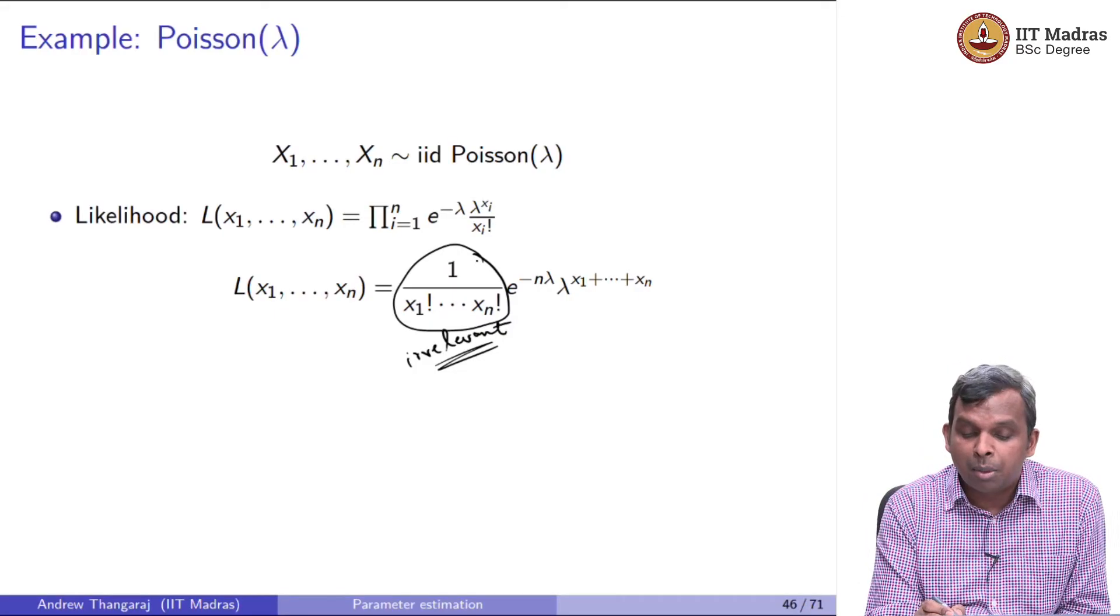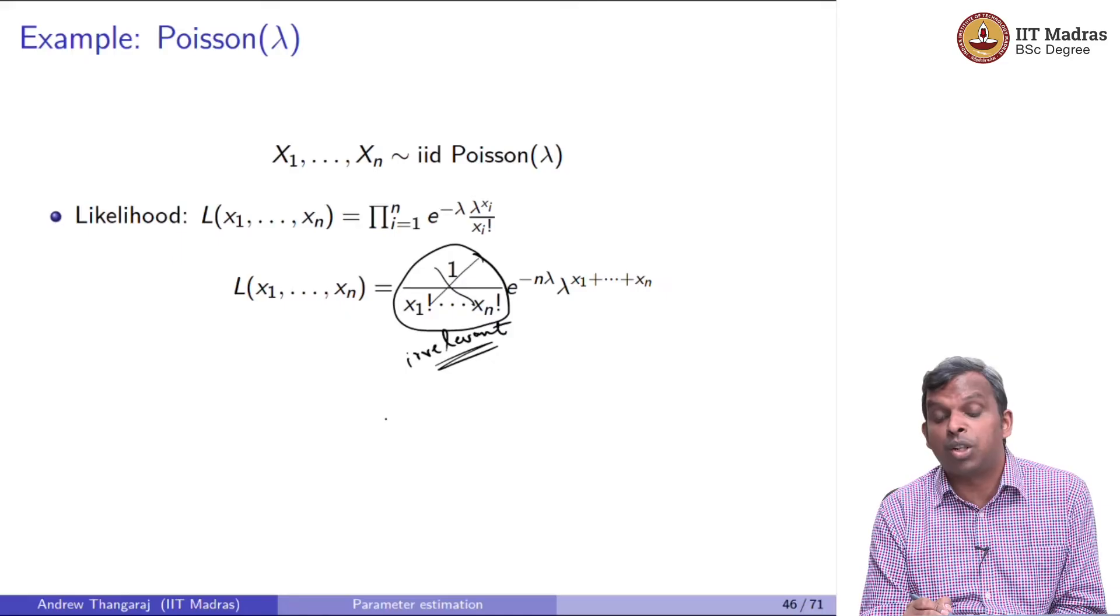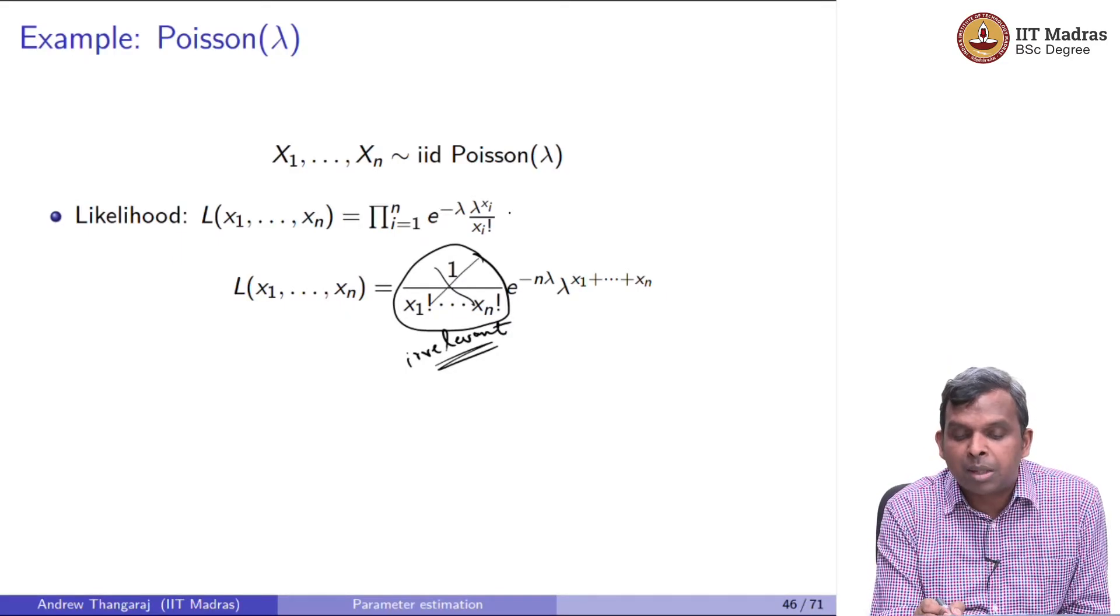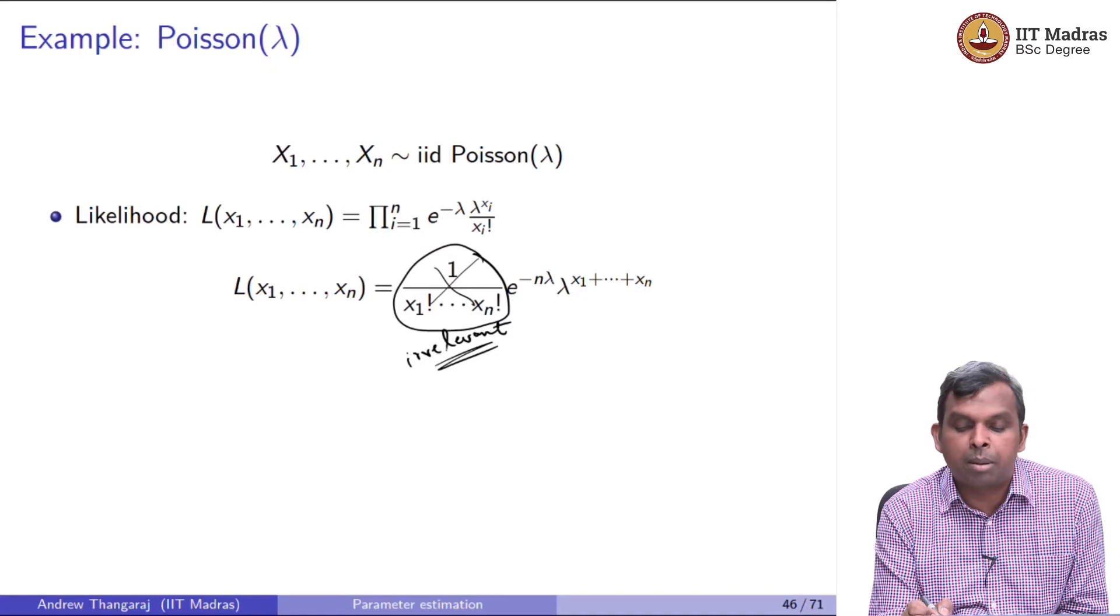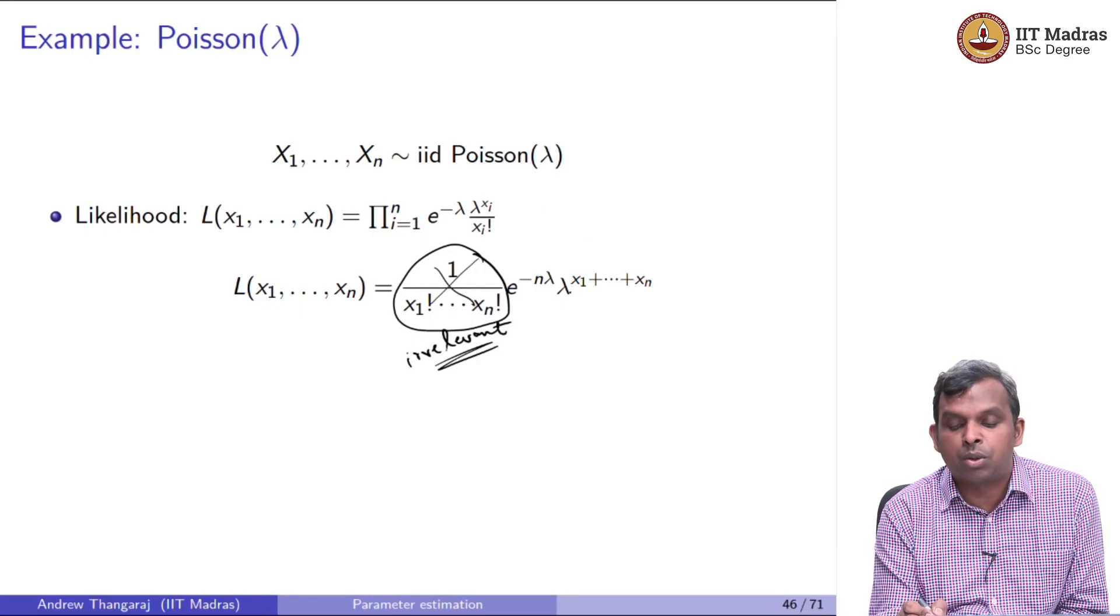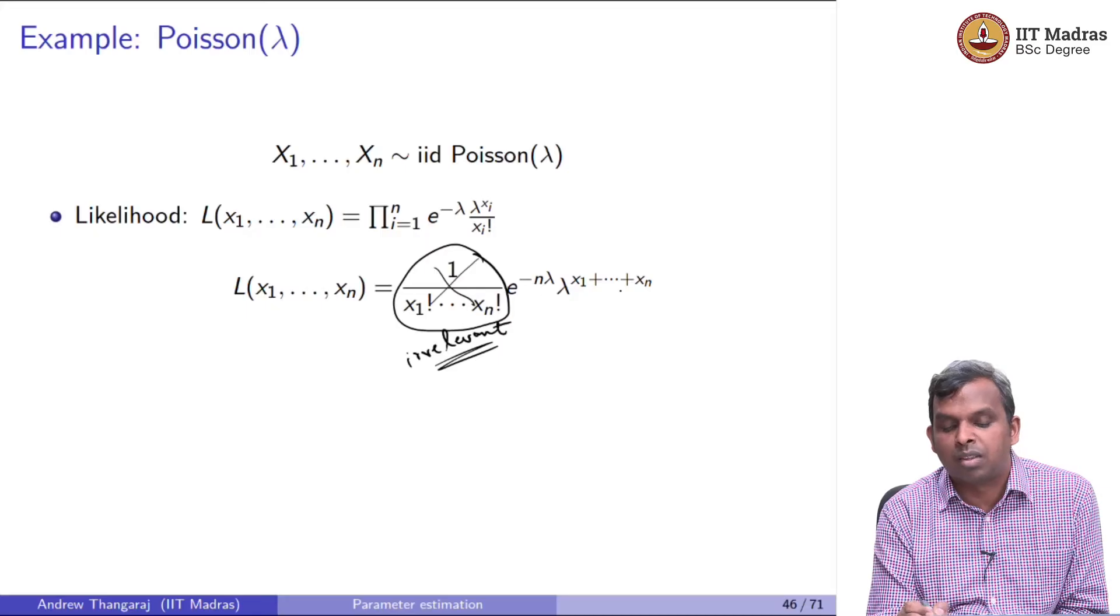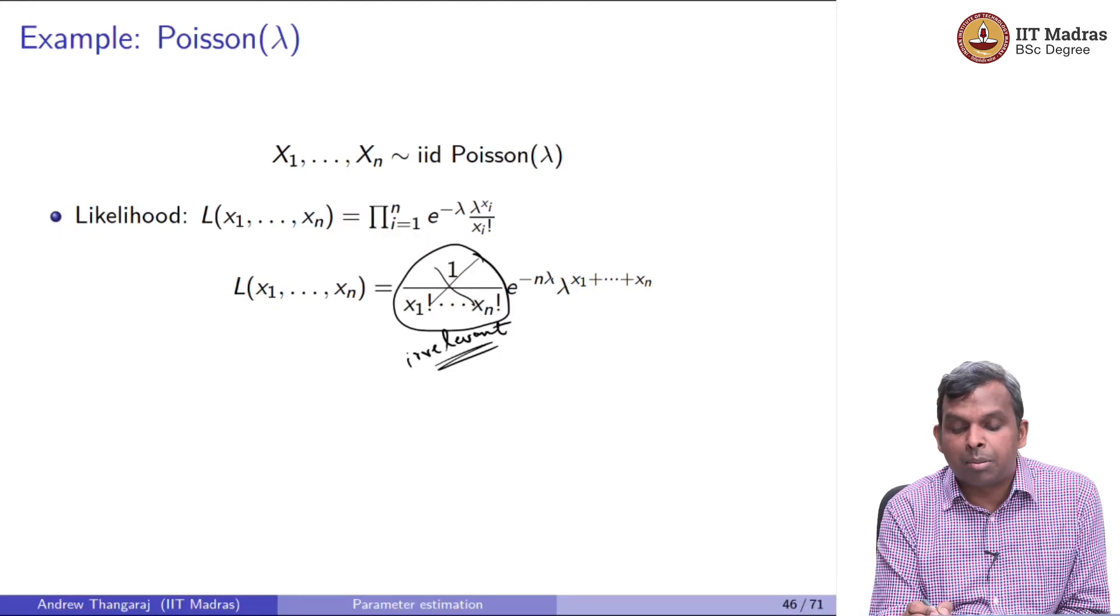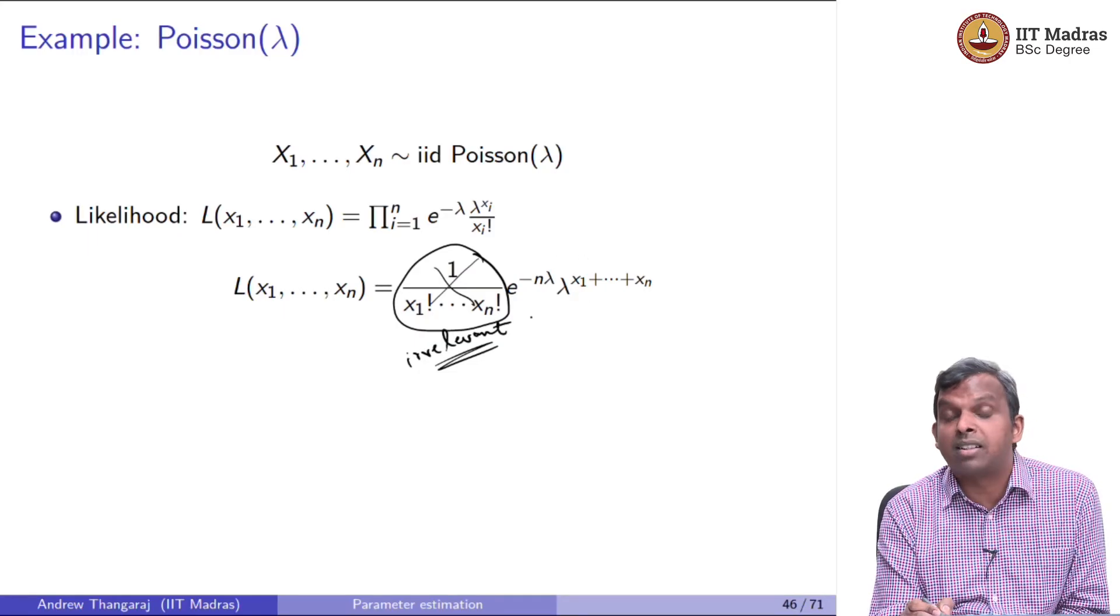In most cases, people will end up ignoring these kind of parts which are irrelevant to you in your maximization. How did I get the e^(-nλ)? There is e^(-λ) times e^(-λ), e^(-λ) n times you are multiplying, so you get e^(-nλ). And how did I get this? There is λ^x1, λ^x2, multiply all of those together, you get this.